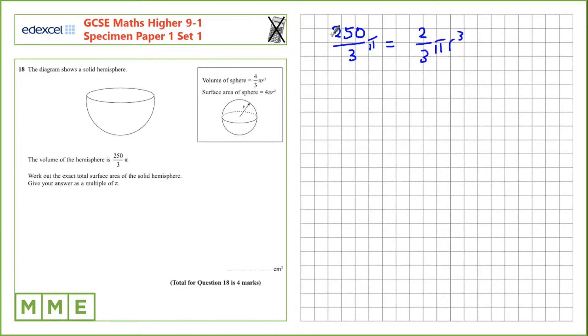A few things we can cancel here immediately. We've got a division by 3 on both sides, we can cancel that. And we can cancel pi on both sides. Which leaves us with 250 equals 2 r cubed. Let's divide by 2. So we have 125 equals r cubed.